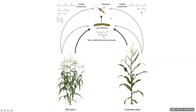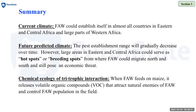In addition to these volatiles, the plant also produces non-volatile chemical compounds that affect the growth and development of herbivores feeding on the plant. As a summary, under the current climate, our model suggests that fall armyworm can establish itself in almost all countries in Eastern and Central Africa and large parts of Western Africa. Under the future predicted climate, the pest establishment range will decrease gradually over time.